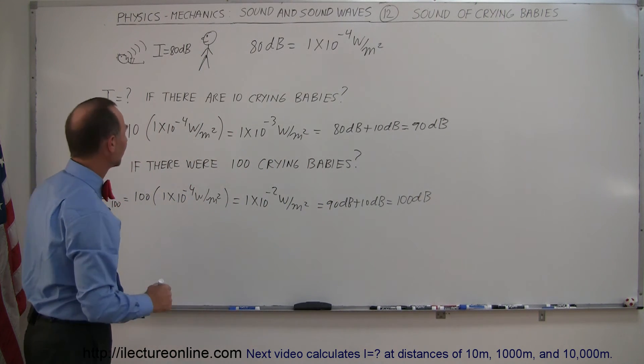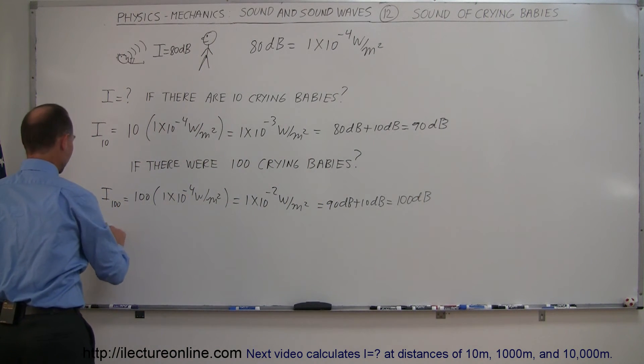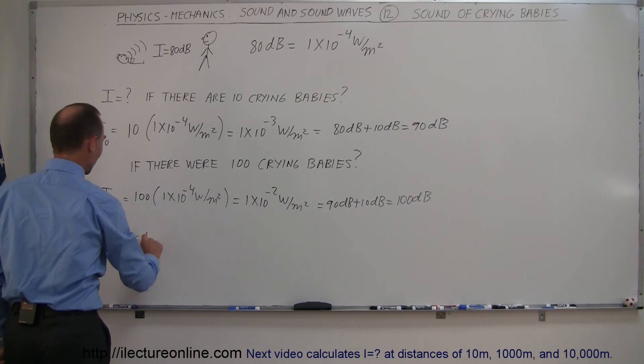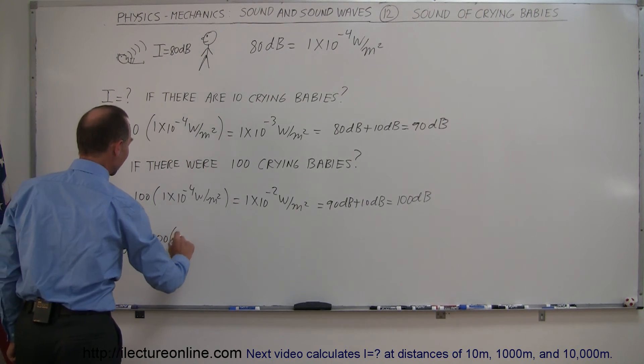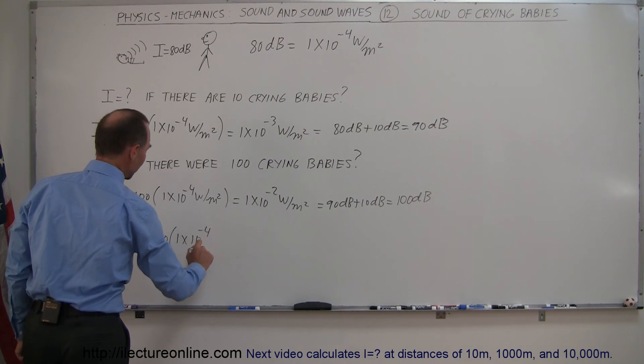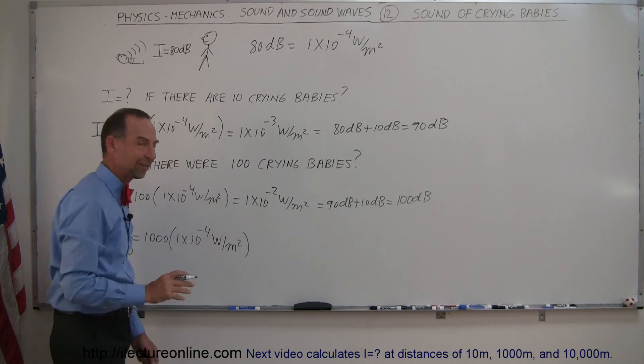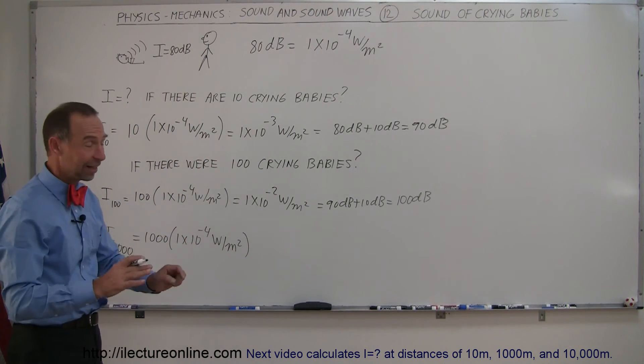And now let's go for a really crazy scene. What if there were a thousand crying babies? The intensity of a thousand crying babies would be one thousand times the intensity of one crying baby, but of course in the standard units of watts per square meter, because that's a linear scale. Decibels is not a linear scale.